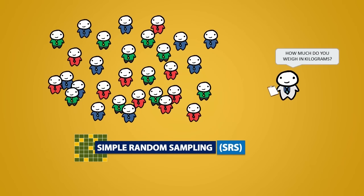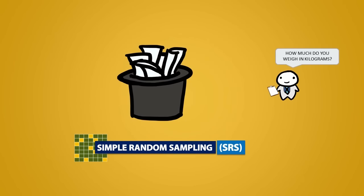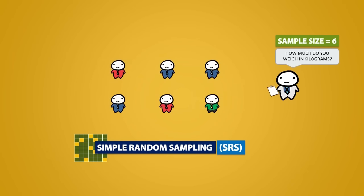You can think of an SRS as putting names into a hat and selecting N of them. So if I wanted a sample size of 6, I would select 6 papers and come up to the randomly chosen people to interview them.